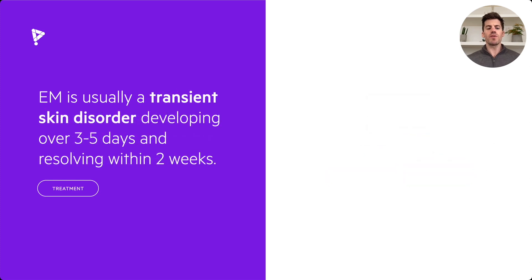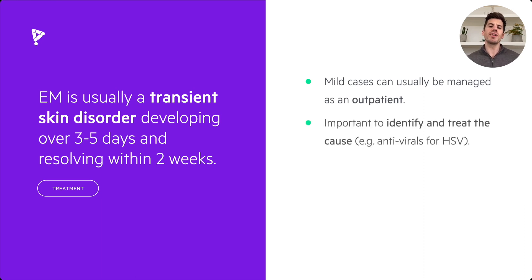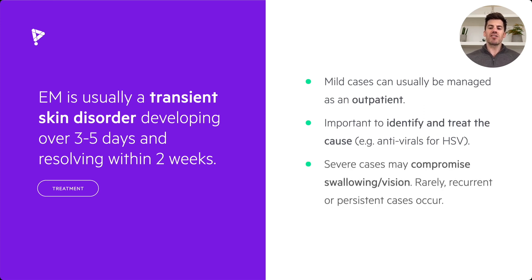Erythema Multiforme is usually a transient skin disorder — it develops over three to five days and then usually resolves within two weeks. Mild cases can usually be managed as outpatient, and it's important to identify and treat the underlying cause, for example providing antiviral medications if caused by herpes simplex virus. In severe cases, patients may have compromised swallowing or vision due to severe mucosal involvement, and rarely recurrent or persistent cases can occur.